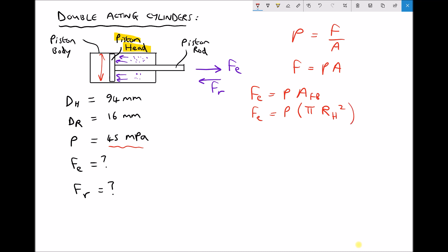We can add the radius of our piston head to our list of variables. The radius of the piston head, Rh, is just half of the diameter of the piston head. So in this case, it's 47 mm. Now just before we plug any values in, we need to convert all of these variables to SI units. So 47 mm becomes 0.047 m, and 45 MPa is the same as 45 × 10⁶ pascals.